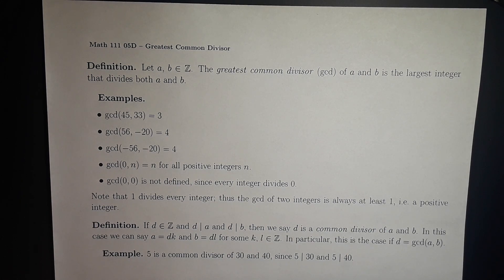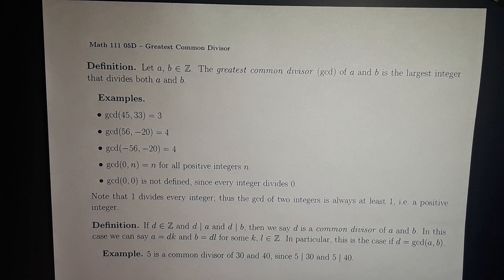The GCD of 0 and n is equal to n for all positive integers n, since n divides 0 — because n equals 0 times n — and certainly n divides n, since n equals n times 1.